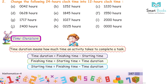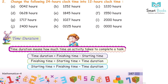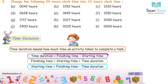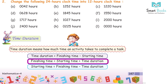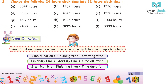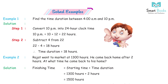Time Duration: Time duration means how much time an activity takes to complete a task. Time duration = Finishing time − Starting time. Finishing time = Starting time + Time duration. Starting time = Finishing time − Time duration.